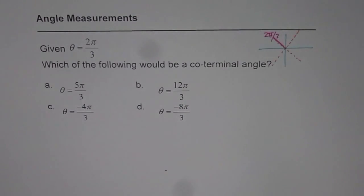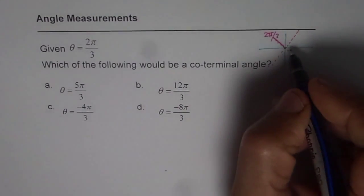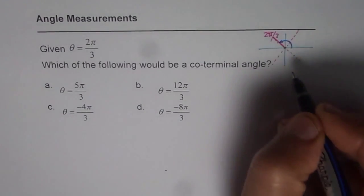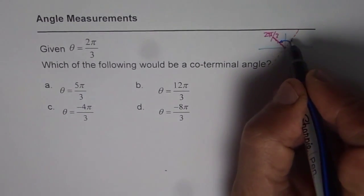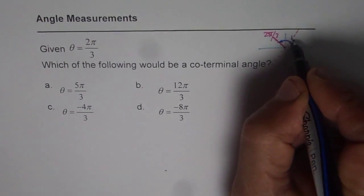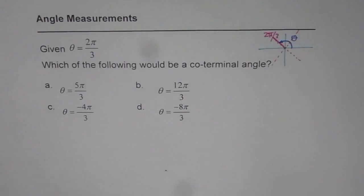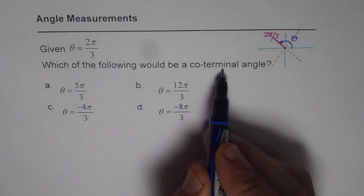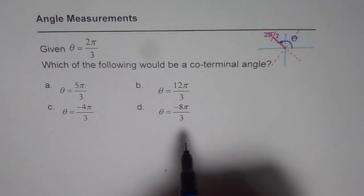The angle given to us is always the principal angle, so it is measured counterclockwise from the x-axis. So that angle theta is 2π/3, and we need to find the co-terminal angle.